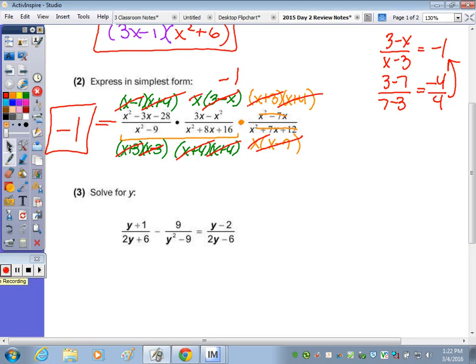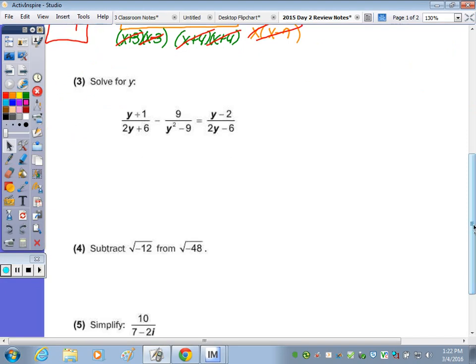Number 3 says to solve for y. It doesn't say to check, so we just have to solve. And it's a fractional equation. So your goal is to get every fraction so that it has the same denominator, and then you can cross them all out and solve the top. You may not be able to see the denominator or the least common denominator until you factor. So let's factor all the expressions in the denominator. So this is 2 times y plus 3, y plus 3, y minus 3, 2 times y minus 3. So every fraction has to have all three factors.